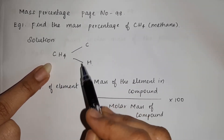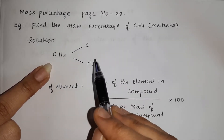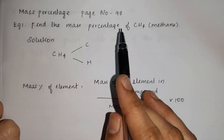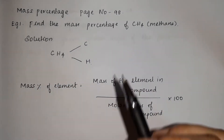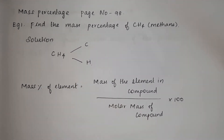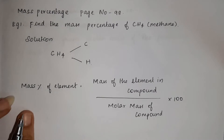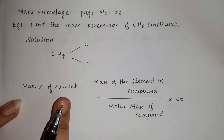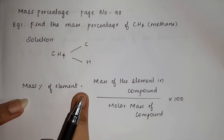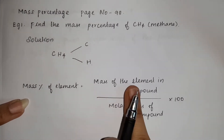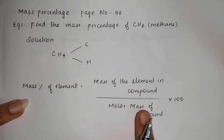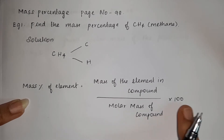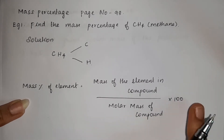This is a mass percentage of CH4. This is a formula. The mass percentage of the element is equal to mass of the element in a compound divided by molar mass of a compound, into 100.